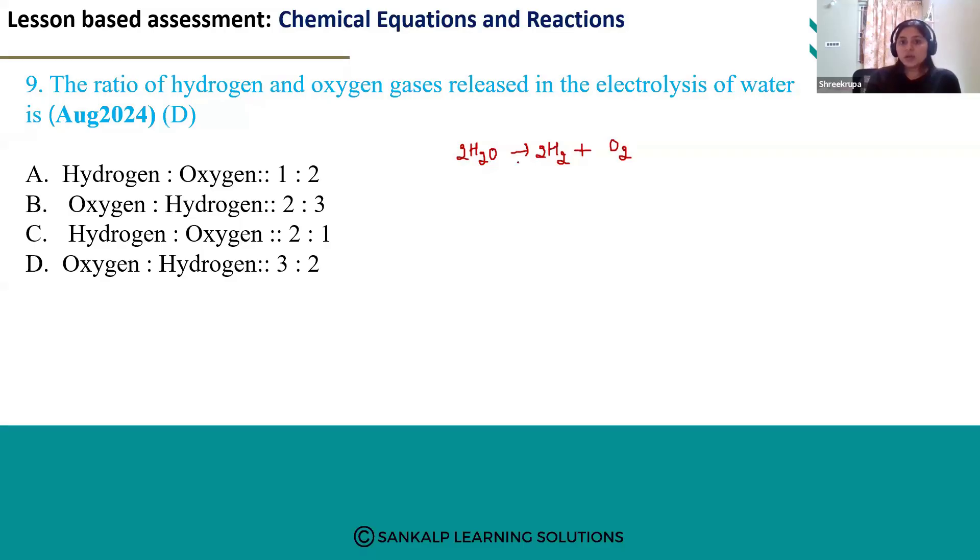So, now you can see two molecules of hydrogen gas being released and one molecule of oxygen gas being released. So, the ratio of hydrogen and oxygen gas released will be 2 is to 1.